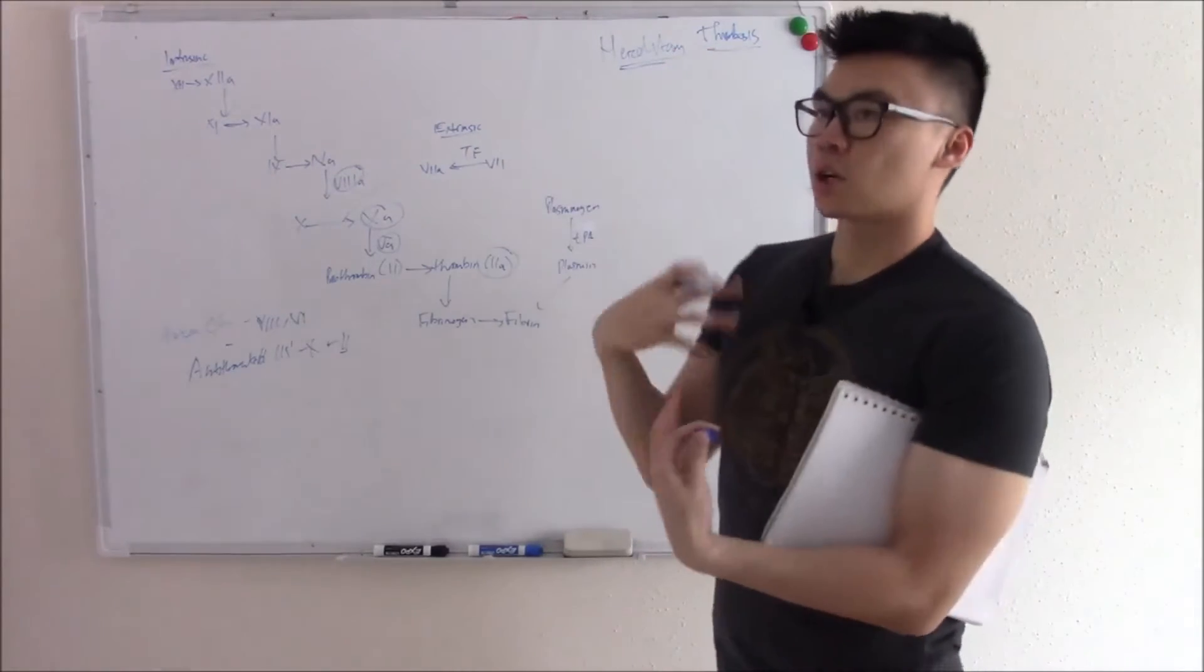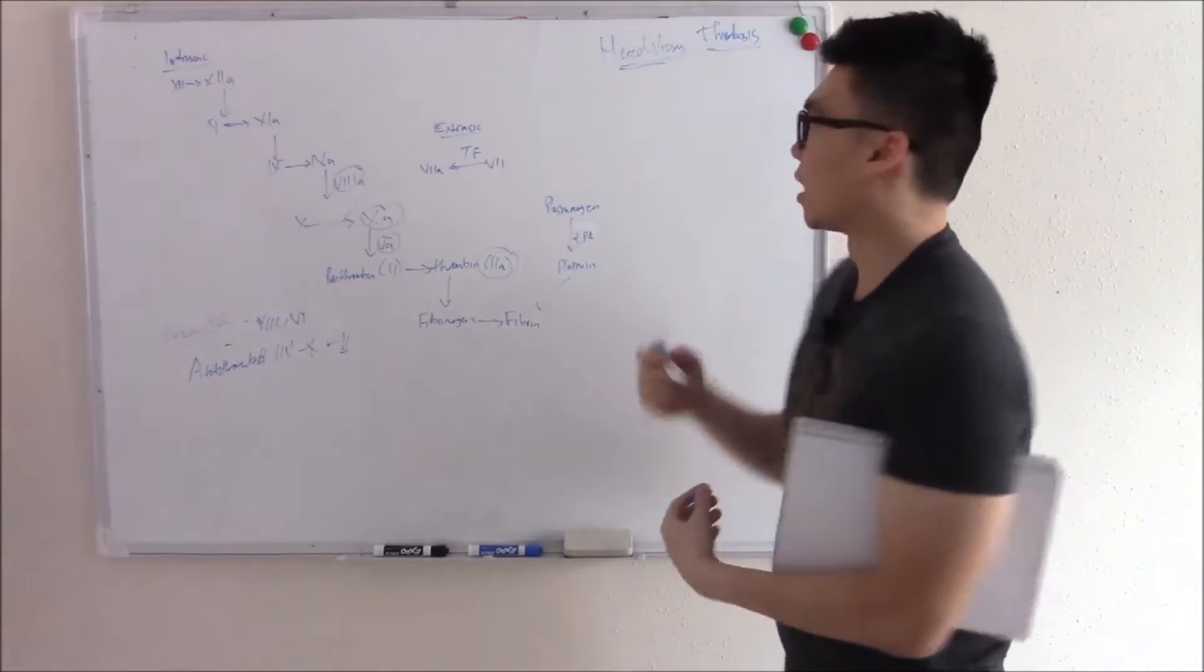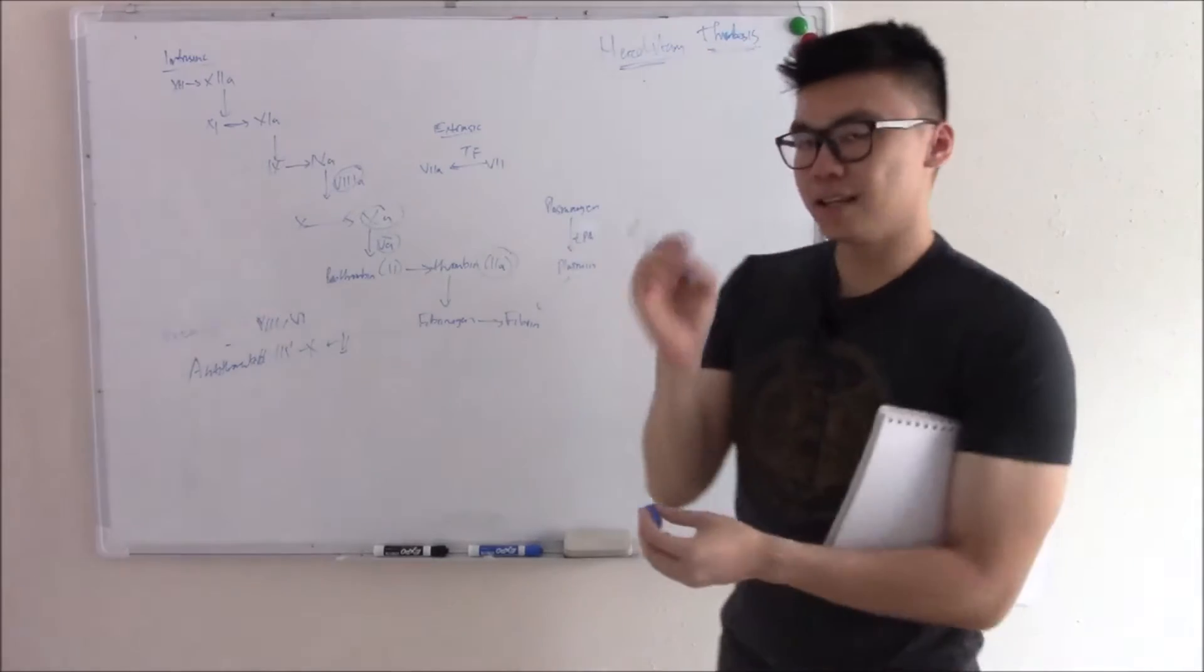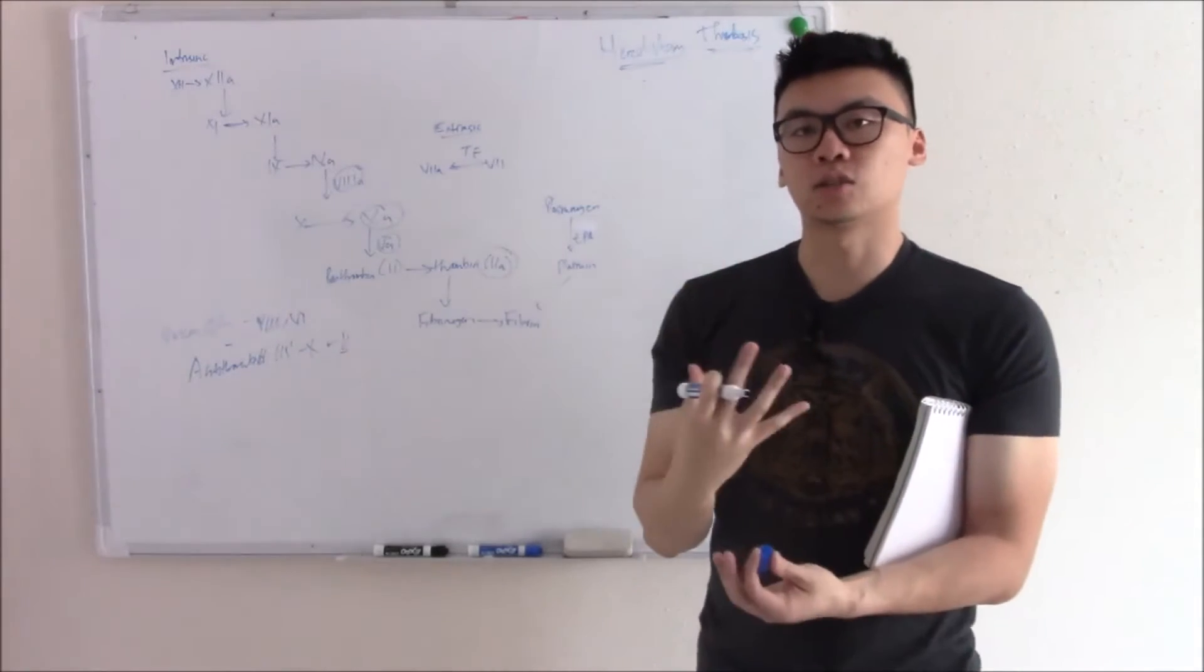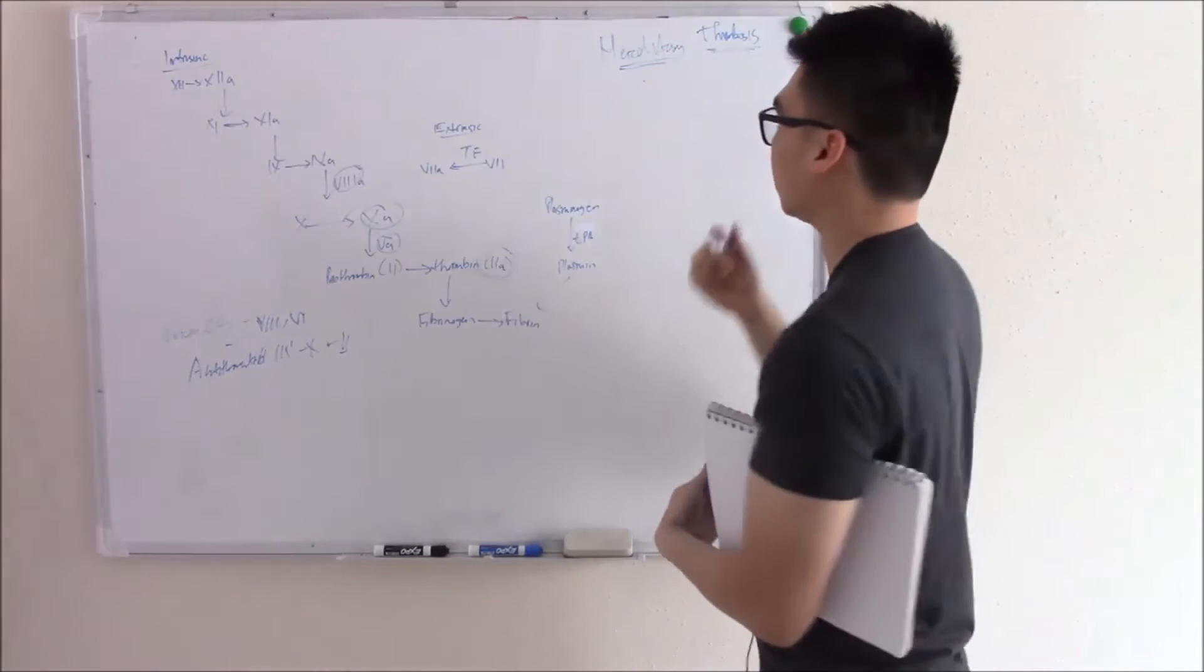And then when you have too much coagulation factors, you'll have too much coagulation, you'll have thrombus forming. And thrombi, that's where thrombosis comes from. Suspect this in any young patient that has a history of thromboembolic events. So DVT, pulmonary embolism, etc.